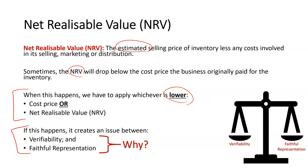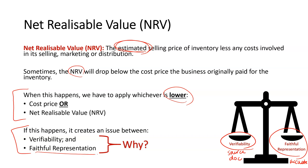If the NRV does drop below cost price, it can create an issue between verifiability and faithful representation. On one hand, we've got a source document that shows the original purchase price, but on the other hand we have to consider what's accurate. If we can no longer get that cost price and we think we can only get less, we have to weigh up which is more important. According to this rule, we choose faithful representation and adjust our records to whichever is lower.